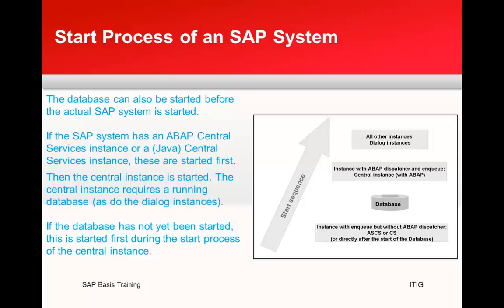The instance with NQ but without ABAP dispatcher, that is ASCS, is started first. The priority order is: priority one goes to the ABAP central services instance, priority two goes to the central instance with an ABAP dispatcher and an enqueue work process, and priority three goes to the other dialog instances. So to summarize: first is ABAP central services instance, second is central instance, third is all other dialog instances.